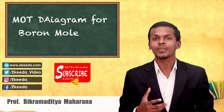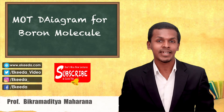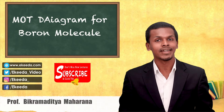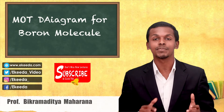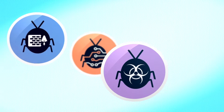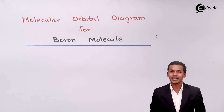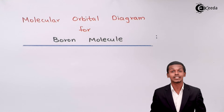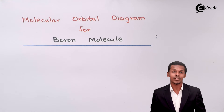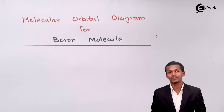Hey friends, in the previous lecture we talked about the molecular orbital diagram for the neon molecule, and now we are going to talk about the molecular orbital diagram for the boron molecule. The first thing we have to do is represent the atomic orbital diagram for the boron atom, and then we will be able to draw the molecular orbital diagram for the boron molecule.